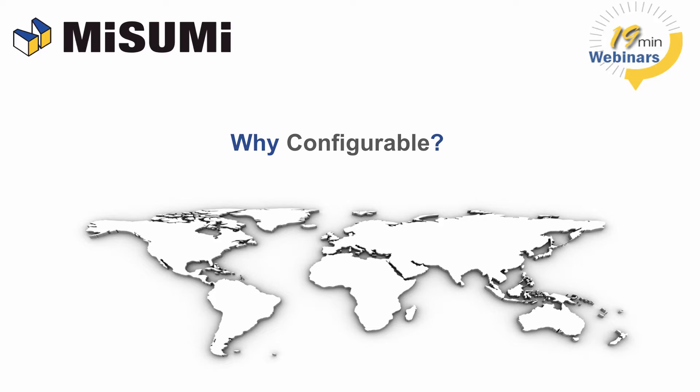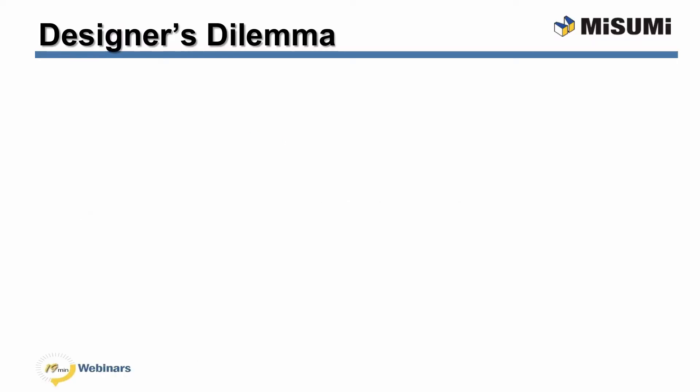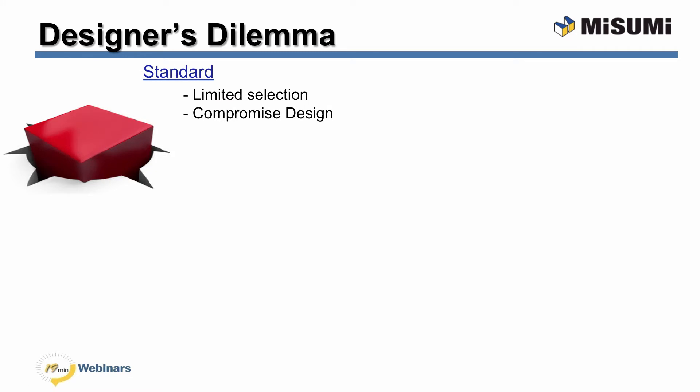Configurable components solve the designer's dilemma. A designer has two choices for components: standard or custom. Standard components have limited selection and often force designers to compromise their designs. These have many pluses, such as CAD, static part numbers, fast delivery, and often seem inexpensive and convenient.